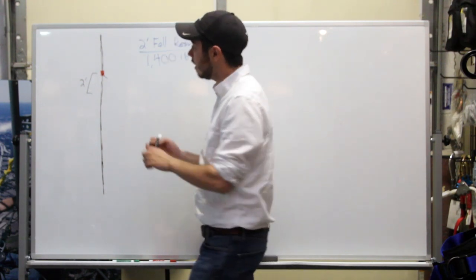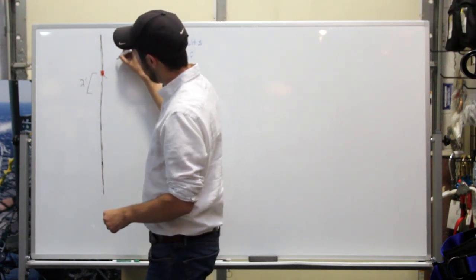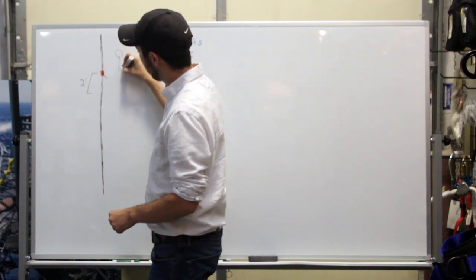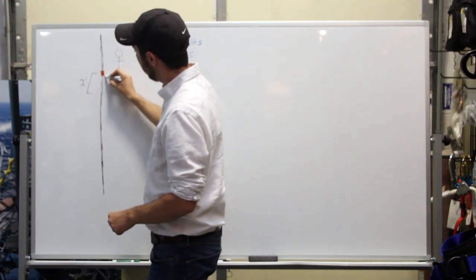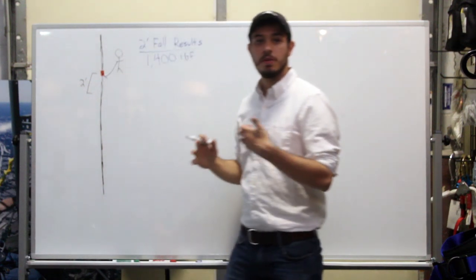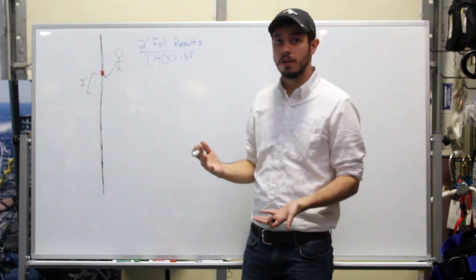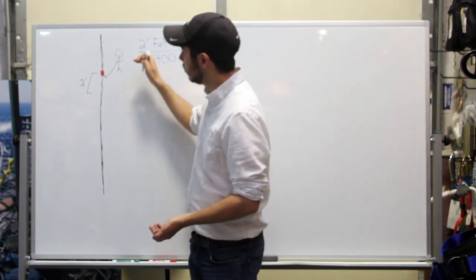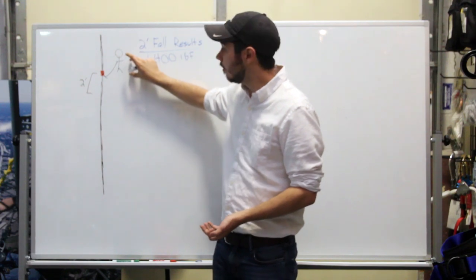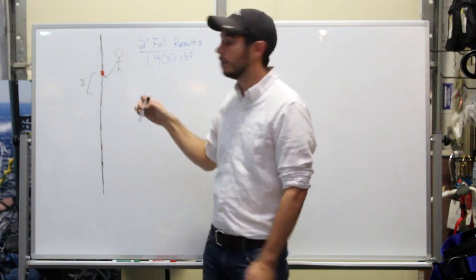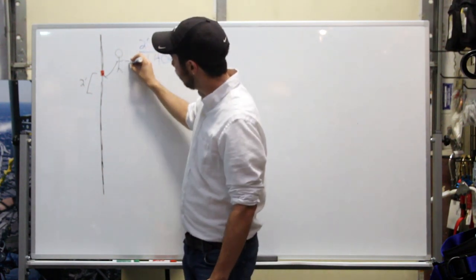So let's say, instead, you are actually up here, and you've connected the device up to yourself. Alright, so now you've got a factor two fall, a four foot fall in this case. So you're going to fall the length of the lanyard, and then you're going to fall that length again. So now you are up to a four foot fall.